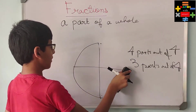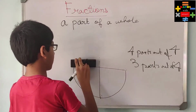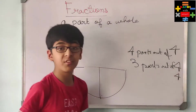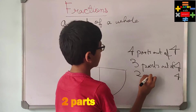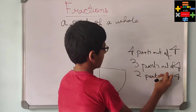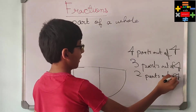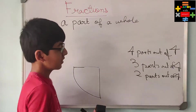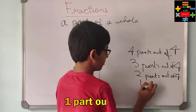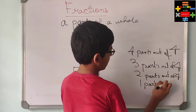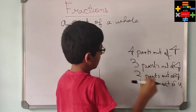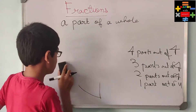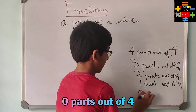Now suppose if I give one slice to my father — so how many slices am I left with? It was totally divided into four parts. Now suppose if one more slice I give to my neighbor, so now how many slices am I left with? I am left with one part out of four. And now finally suppose this last piece went missing — so now I have zero parts out of four.